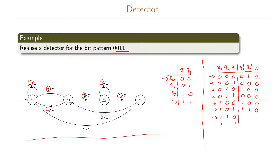Now, when we are in state S3 and we have a zero as input, we go to state S1, which we have denoted 01, with zero as output. And finally, when we are in state S3 and we have a one as input, we will output a one and we will go back to the all-zero state, which is state S0.